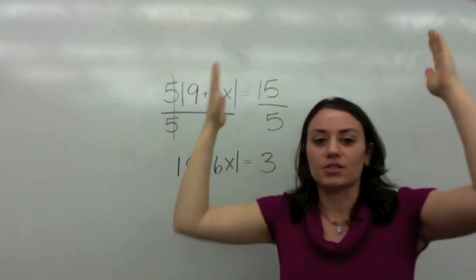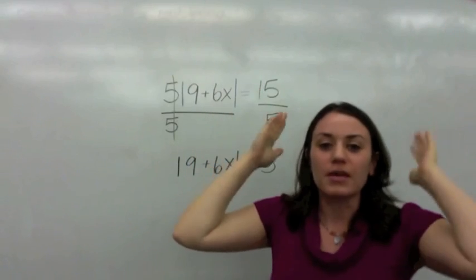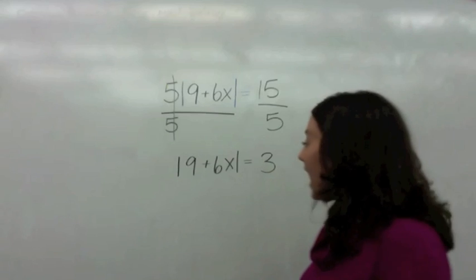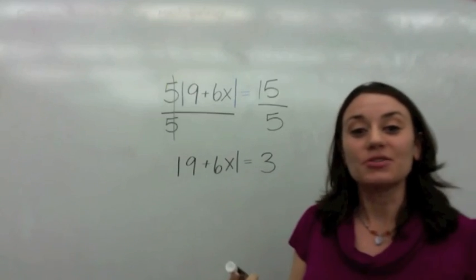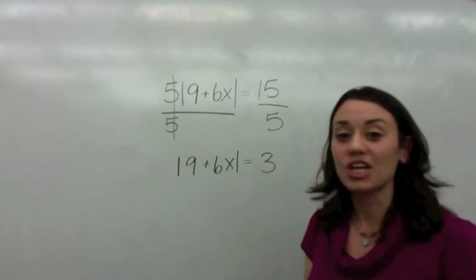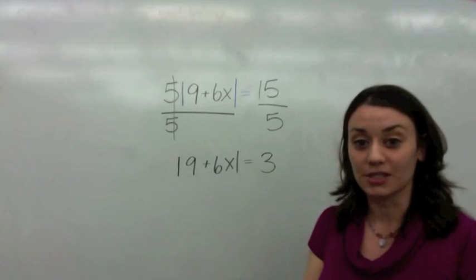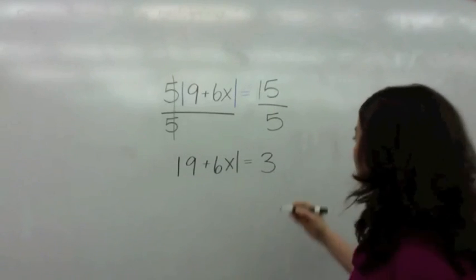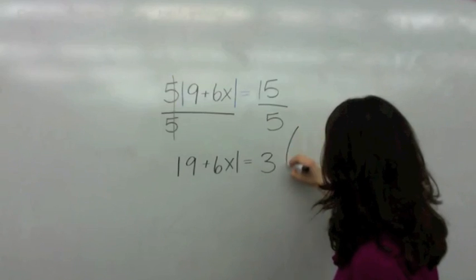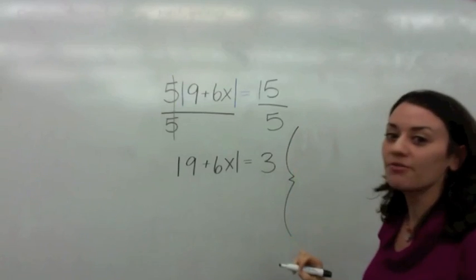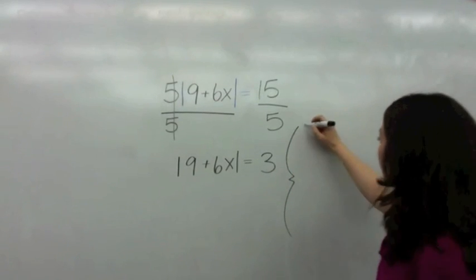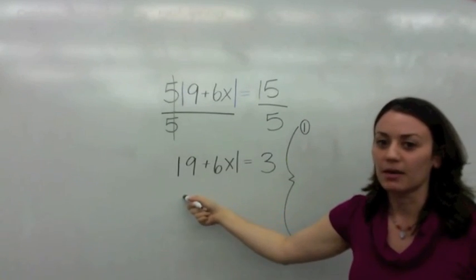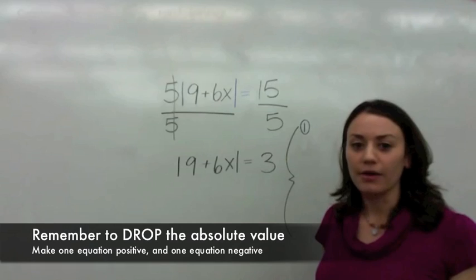So you say to yourself, absolute value equations have two answers. One's positive, one's negative. And the first thing you say to yourself is, this is the whole equation. It has two parts. So what kind of map are we drawing? A brace map. That is correct. Good job. So we have two equations, correct? The first equation.